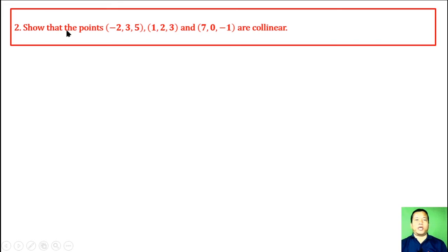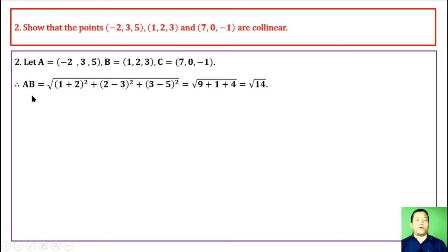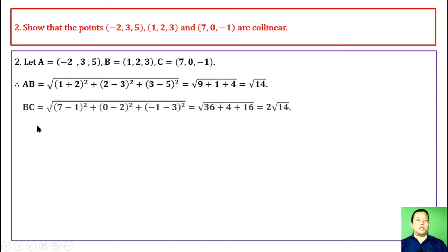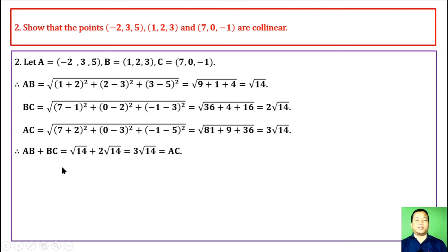Question 2: Show that the three points are collinear. Let A, B, C denote the three points. Using the distance formula: AB = √14, BC = 2√14, and AC = 3√14. Since AB + BC = √14 + 2√14 = 3√14 = AC, the sum of two segments equals the third, proving A, B, C are collinear.